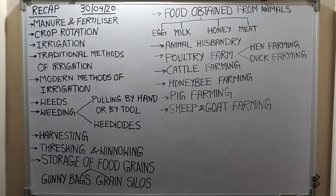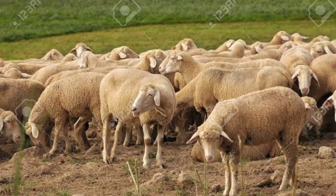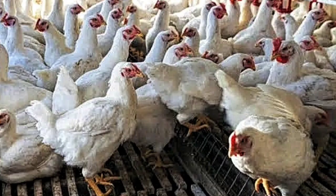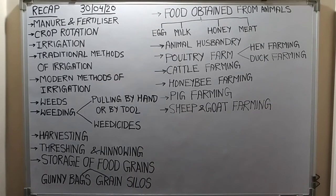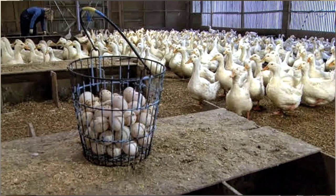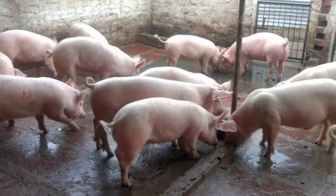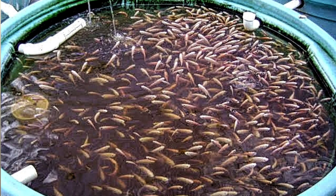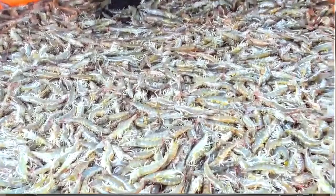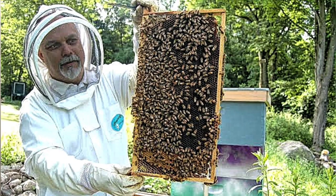In some countries, cattle are also bred for their meat. In India, sheep farming is done for their wool, and in some countries for their meat as well. Hen farming is called poultry farming — it is done for eggs and meat. Duck farming is also done in India for eggs and meat. We also get honey from honey bees.